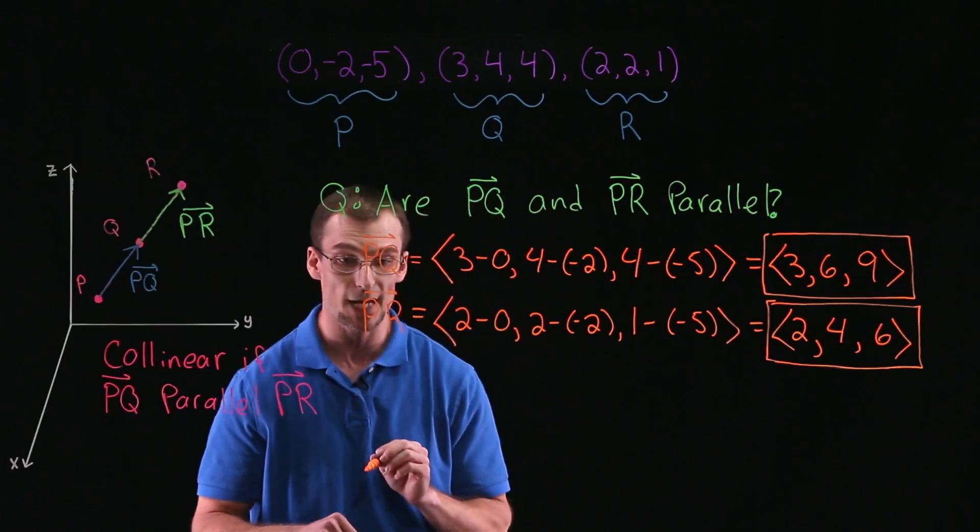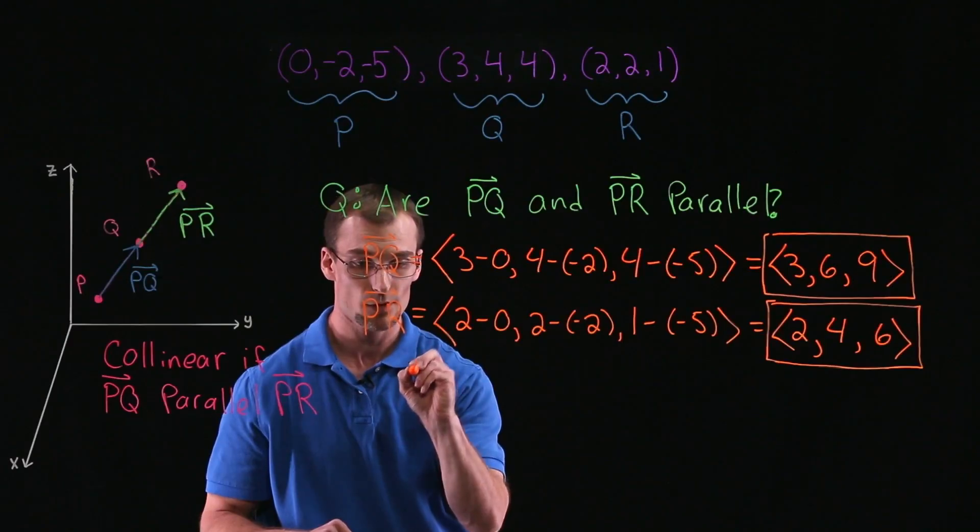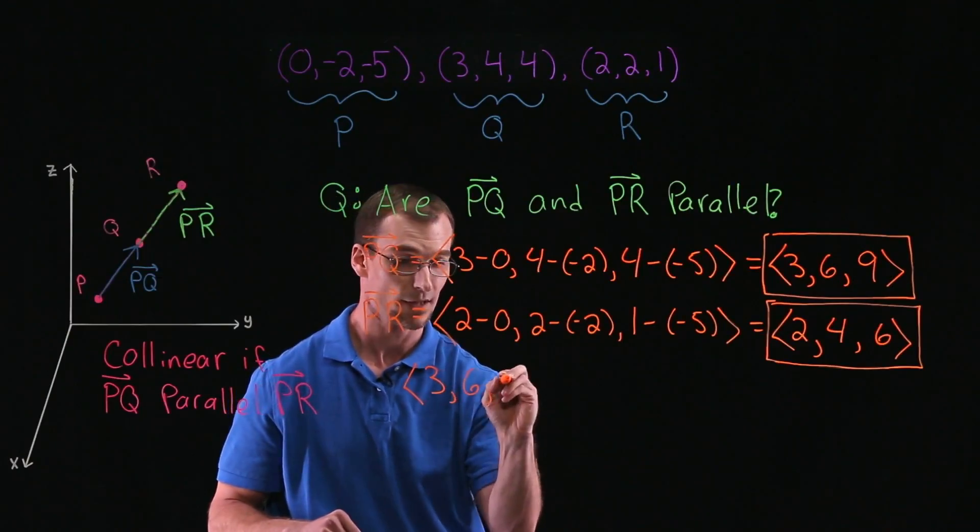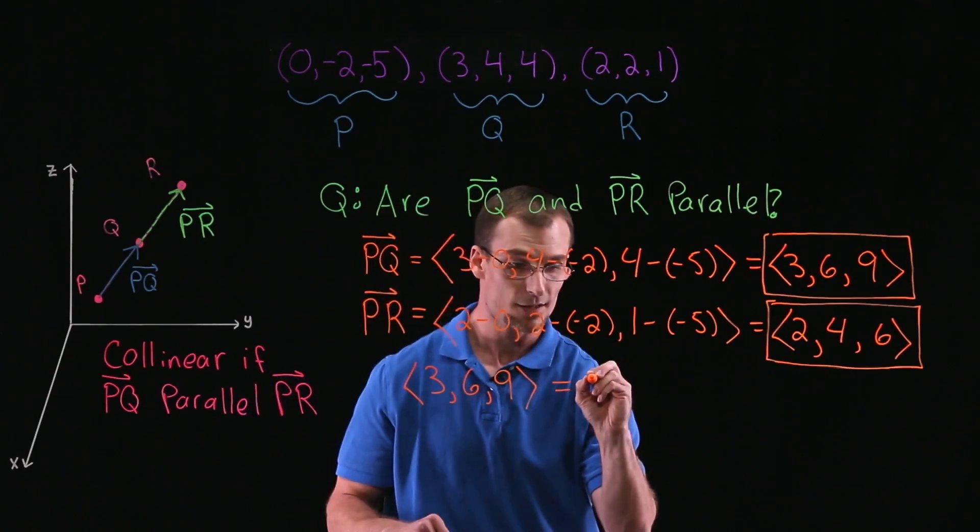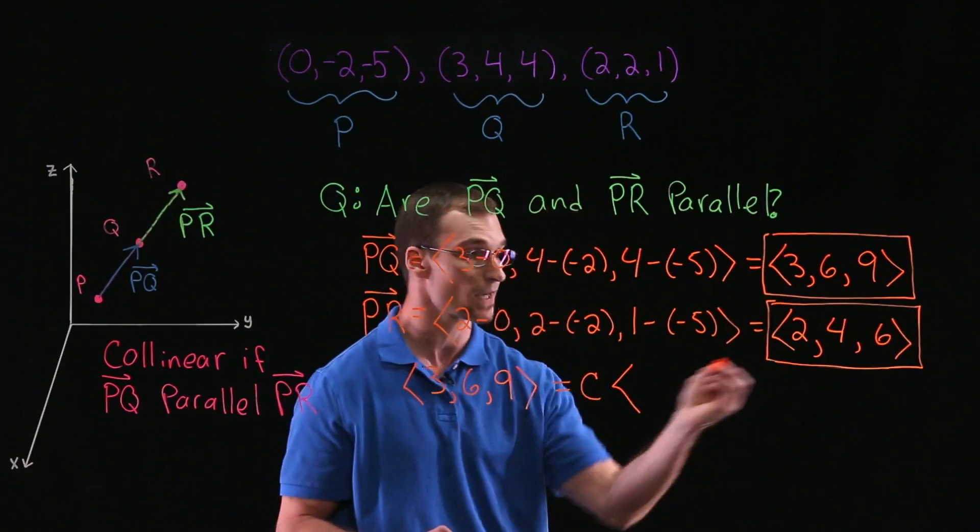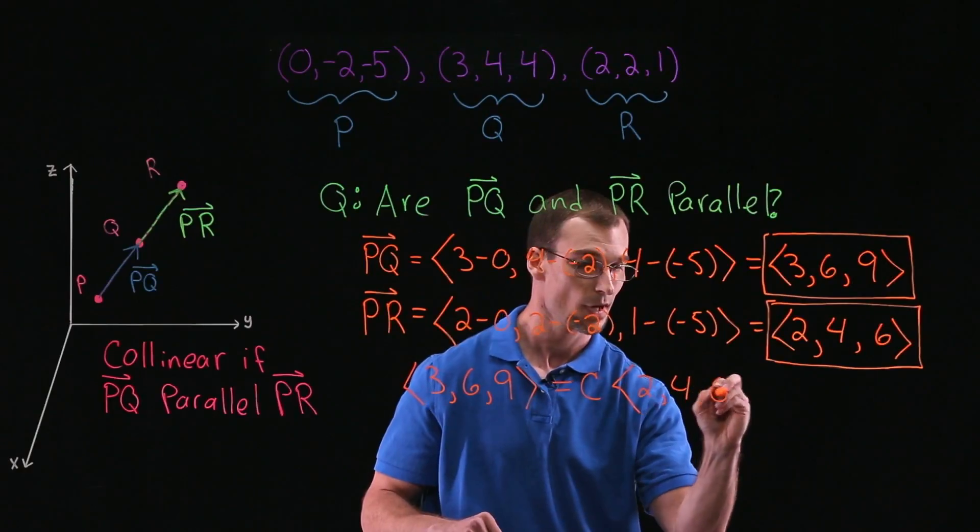So what we want to do is answer the question, basically taking one vector, our PQ, which has components 3, 6, and 9, and can this be written as a scalar multiple? We'll take some scalar C times the other vector, PR, with components 2, 4, and 6.